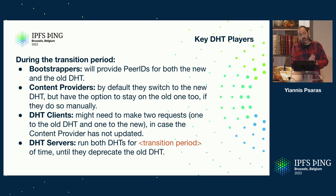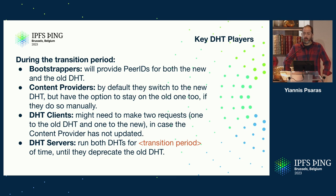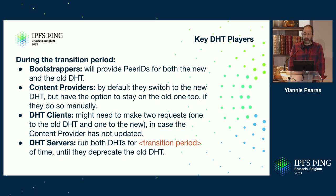If you're providing content and you switch to the new DHT, but your clients haven't upgraded and are still operating on the old system, your content is going to be unavailable and unreachable — which is not great. How do you measure how many nodes have migrated and how many clients are operating on the new system, so you can figure out when to make the later transitions and deprecations? I'll get to that in a minute.